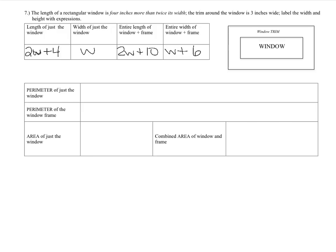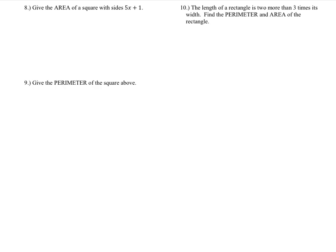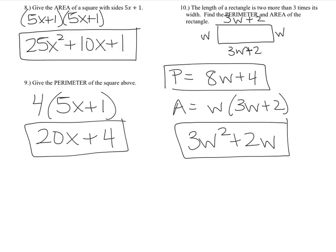Use those expressions to find the perimeter of just the window, the perimeter of the window frame, and the area. Stop the video and try these on your own, then come back to check your answers. The remaining problems are review — try them without help, and seek assistance if needed.